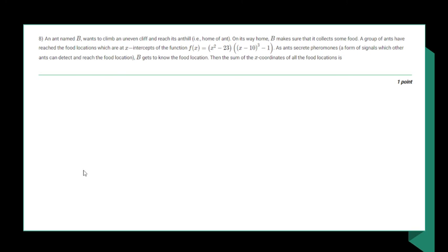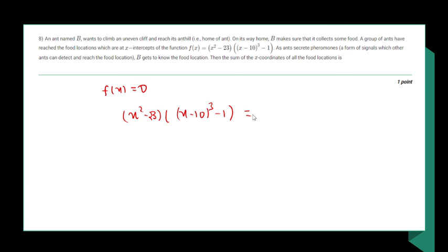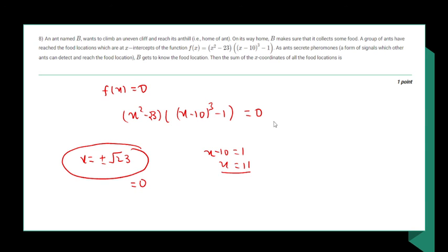The next question asks for the sum of the x-intercepts of f(x) equals (x squared minus 23)(x minus 10) cubed minus 1. Setting f(x) equals 0 gives roots x equals plus or minus root 23 from the first factor, and x minus 10 equals 1 so x equals 11 from the second factor. The roots plus root 23 and minus root 23 cancel out in the sum, leaving the sum of x-intercepts equal to 11.